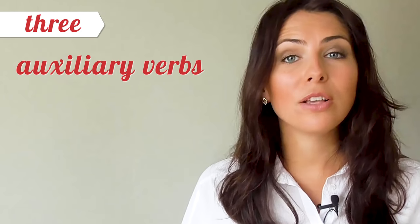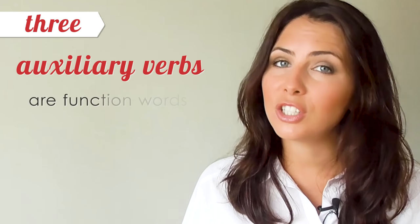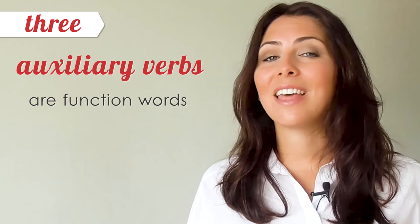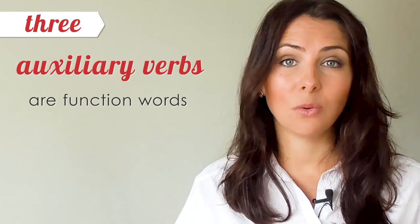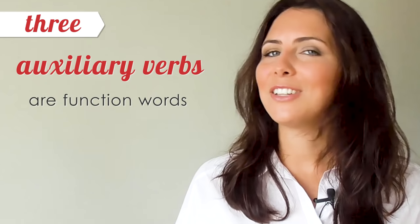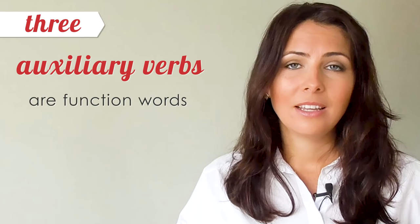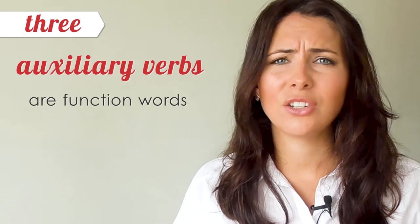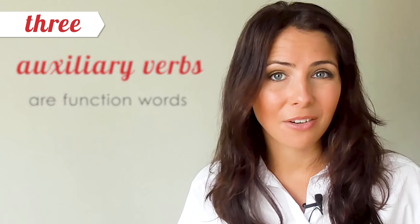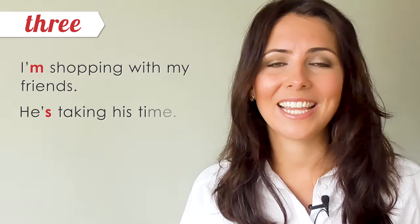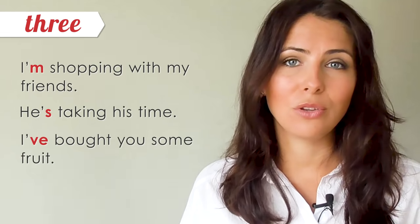Number three. Auxiliary verbs in positive sentences are function words, not content words. This means they're usually unstressed when spoken. Unstressed words in English are often reduced or contracted when spoken out loud, so they can be difficult to hear. For example: 'I'm shopping with my friends.' 'He's taking his time.' 'I've bought you some fruit.'